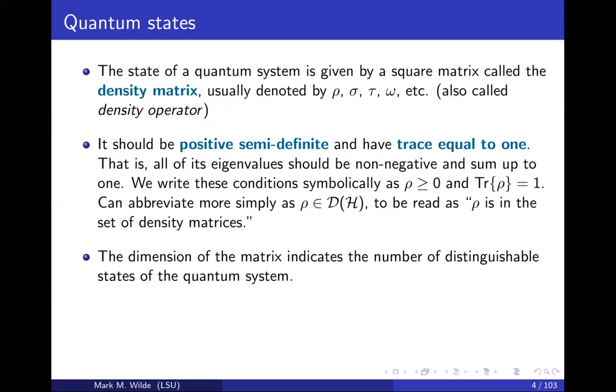And the dimension of this matrix indicates the number of distinguishable states of the quantum system. So for example, if it's a two by two matrix, then that is the state of a qubit, right? And then a qubit, you can encode one classical bit into a qubit. So a classical bit has two distinguishable states and the quantum system for a qubit has two distinguishable states, right? So that corresponds to the dimension. We can also have qutrits, which are three-dimensional quantum states, right? So maybe an atom has a ground level, a first excited state and a second excited state. And those are three levels into which you can encode information. And so the state of that atom will be described by a three by three density matrix.